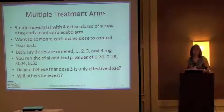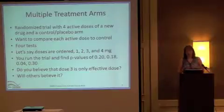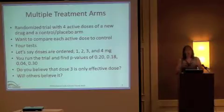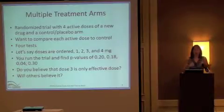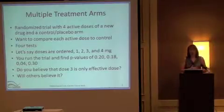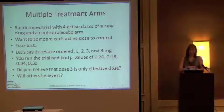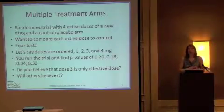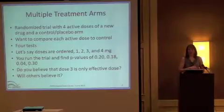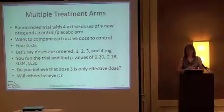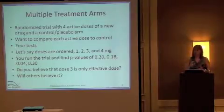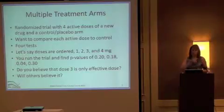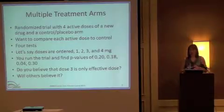Let's say we have a randomized trial with four active doses of a new drug compared to a placebo arm. You want to compare each active dose to placebo, resulting in four statistical tests. The doses are ordered by magnitude — say one, two, three, four milligrams. You do your analyses, compare to placebo, and find p-values across these doses in the order of .2, .18, .04, and .3.